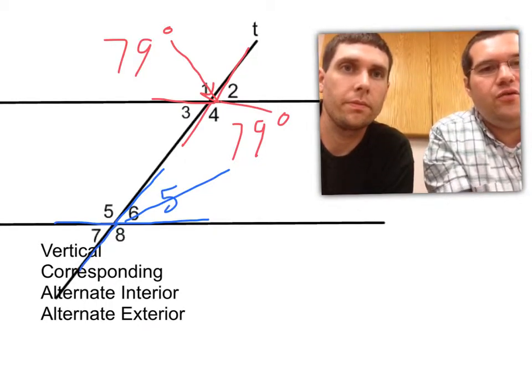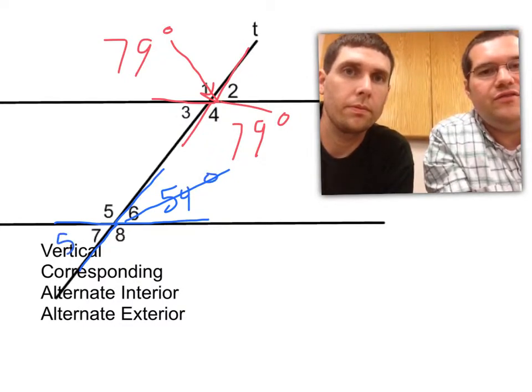And once again, if this was, say, 54 degrees, angle 7 would be 54 degrees.